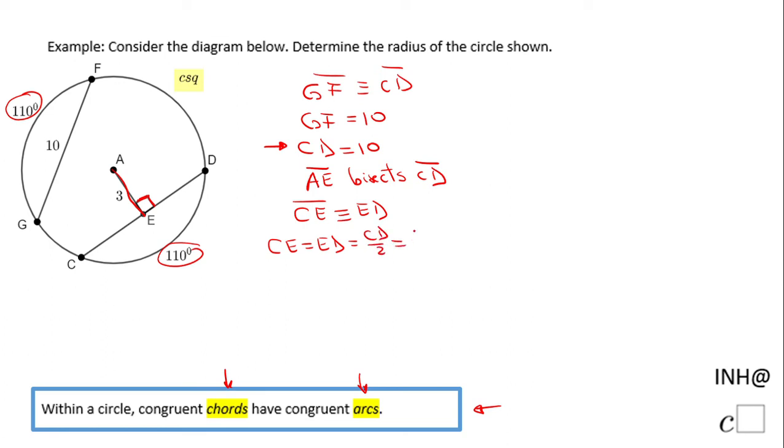In our case, 10 divided by 2 is 5. Either one of these segments, CE or ED, is going to be 5. Now I can find the radius because I can draw a right triangle.